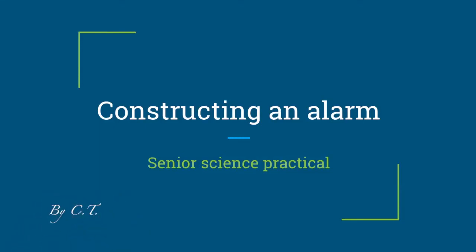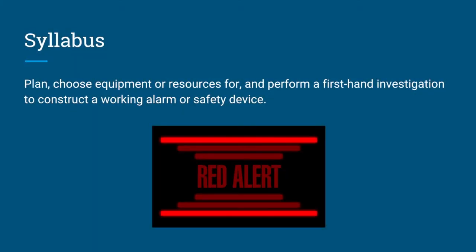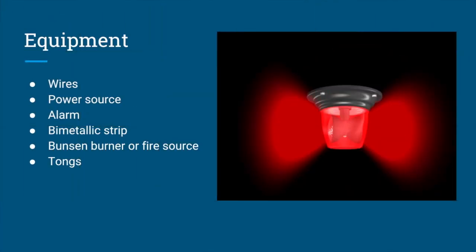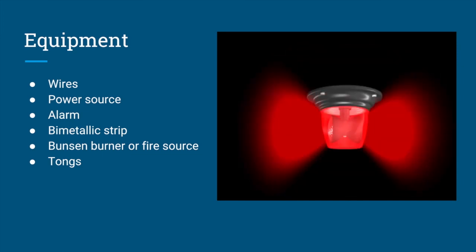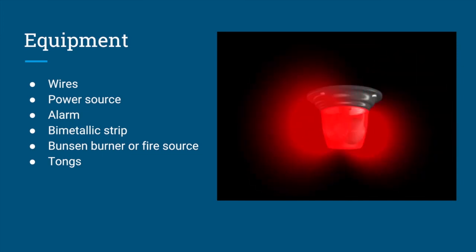Constructing an alarm - senior science practical. Syllabus: plan, choose equipment or resources for, and perform a first-hand investigation to construct a working alarm or safety device. Equipment: wires, power source, alarm, bimetallic strip, Bunsen burner or fire source, tongs.